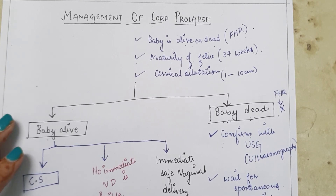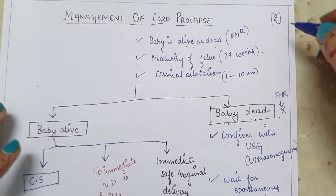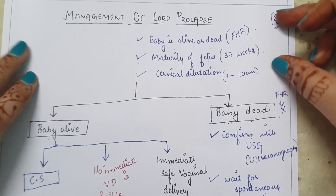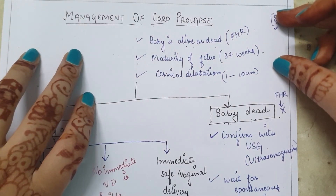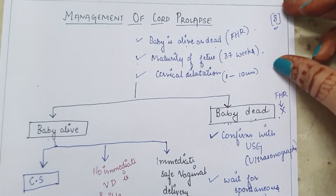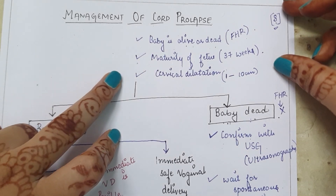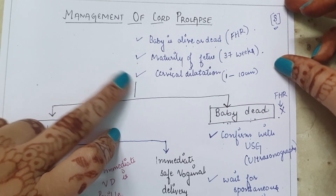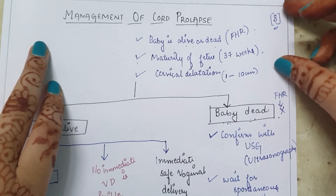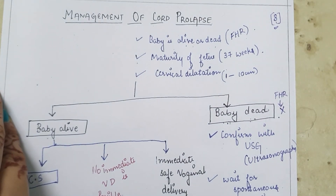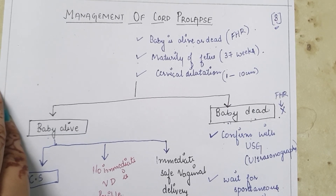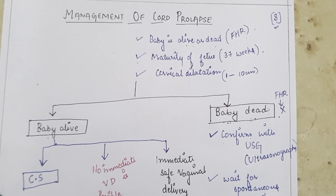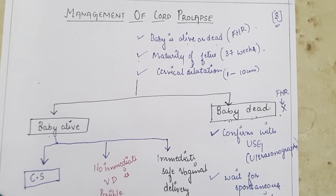If an exam question asks you to write the management of cord prolapse for eight marks, first give the definition of cord prolapse, then write the scheme of management, then nursing management, which covers more marks. Frame the diagnosis within your answer. I'll make a separate video on how to attempt the examination paper. That's all about cord prolapse — if you have any queries please ask in the comment section, suggest topics for further videos, share with other students, stay safe and stay at home.